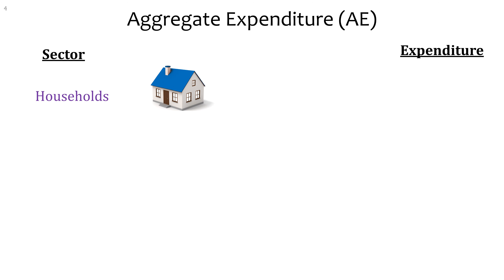We measure GDP through the counting of all spending. The first sector is households — all of the people. They spend money on things like rent, food, clothes, and transportation. Any spending by households is classified as consumption, and the symbol for that is C.